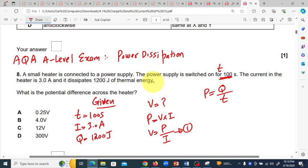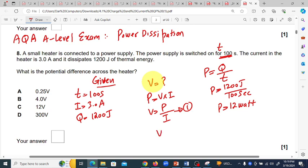Power is 1200 Joules divided by time, which is 100 seconds. We divide and get the power equal to 12 watts. The heater power is 12 watts. If the power is 12 watts, we can calculate the voltage V equals 12 watts divided by current, which is 3.0 amperes.